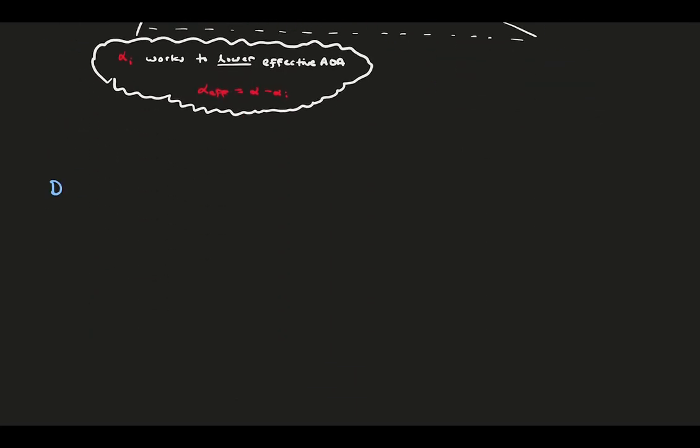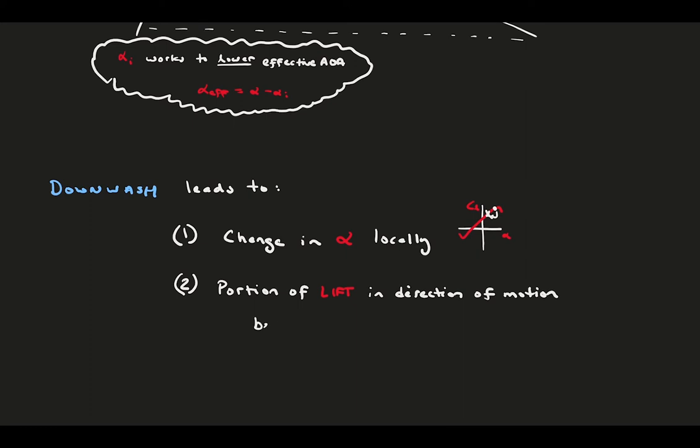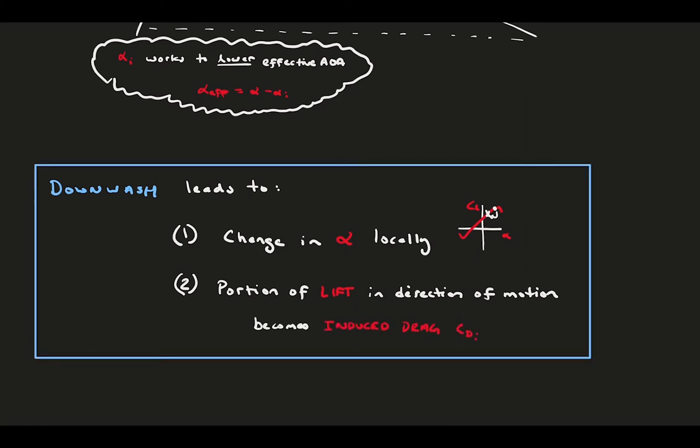Ultimately, downwash does two critical things. First, it changes the effective angle of attack locally, meaning it changes the expected lift performance we should be getting. Second, it tilts a portion of the lift in a way that induces the new drag on the foil and we lose lift. Both of these things, decreased lift and added drag, work to hurt our foil performance. So, it's safe to say that downwash is typically bad.